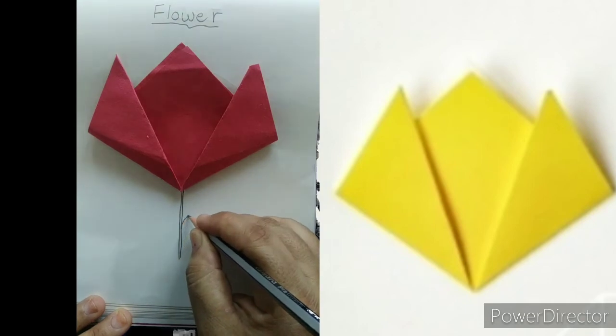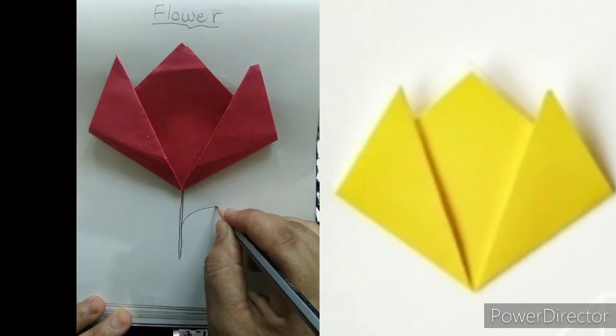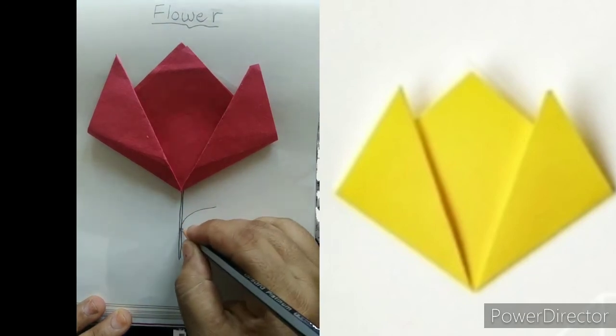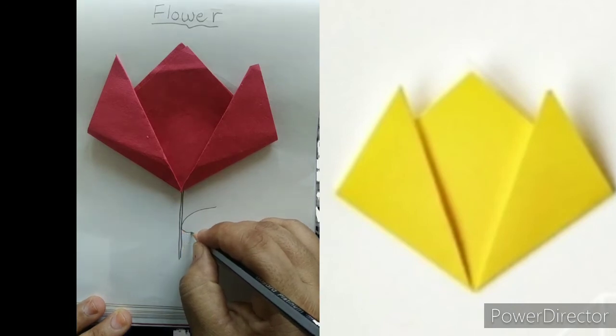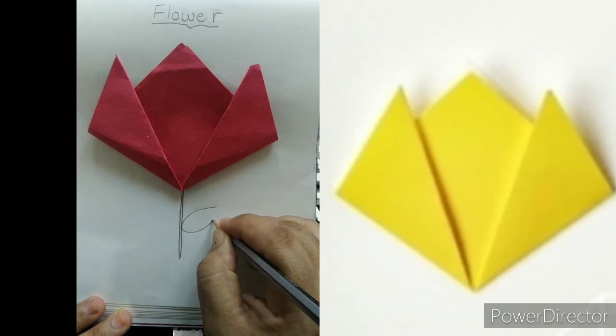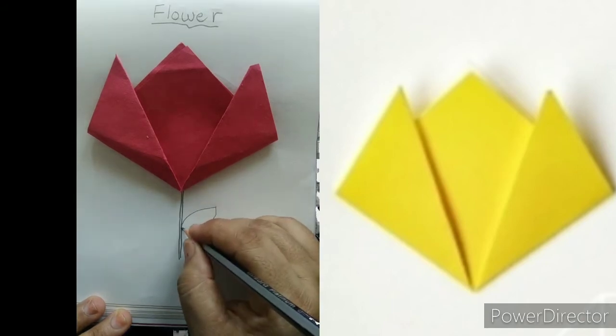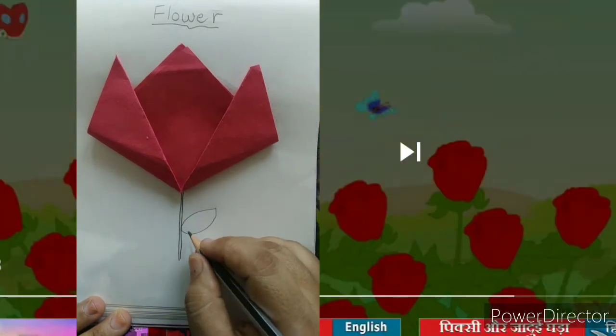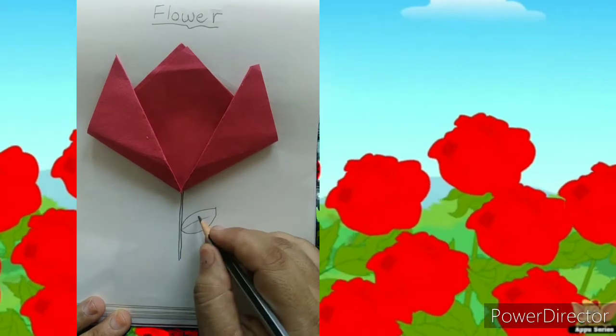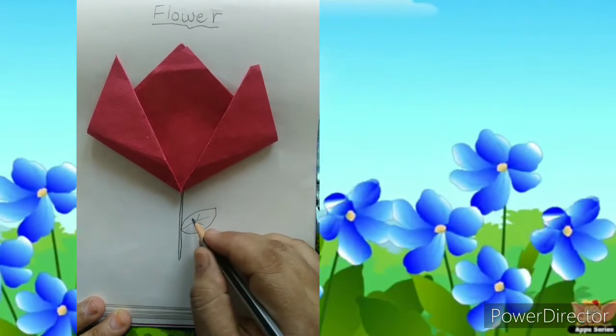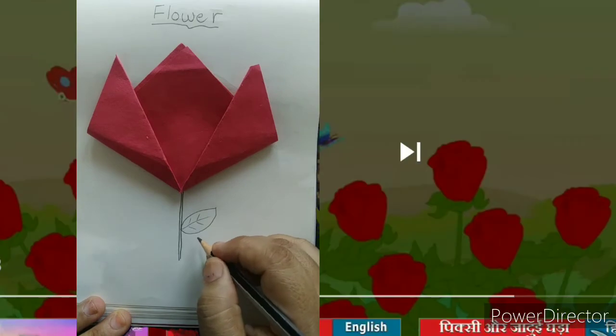Now leaf of a flower. Draw big curve. Again from here, draw big curve and join this and add some lines on the leaf. Slanting line, slanting line.